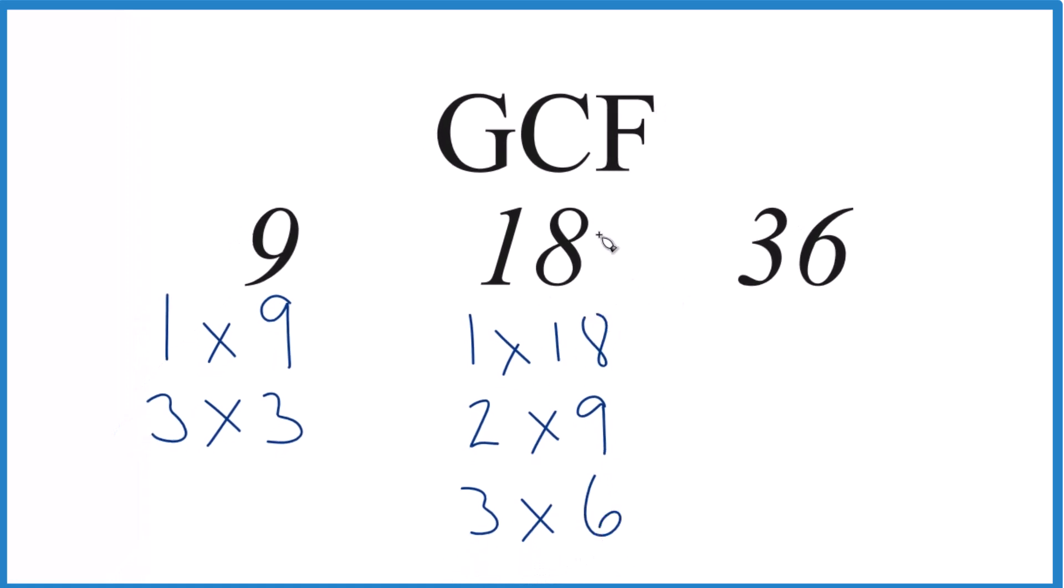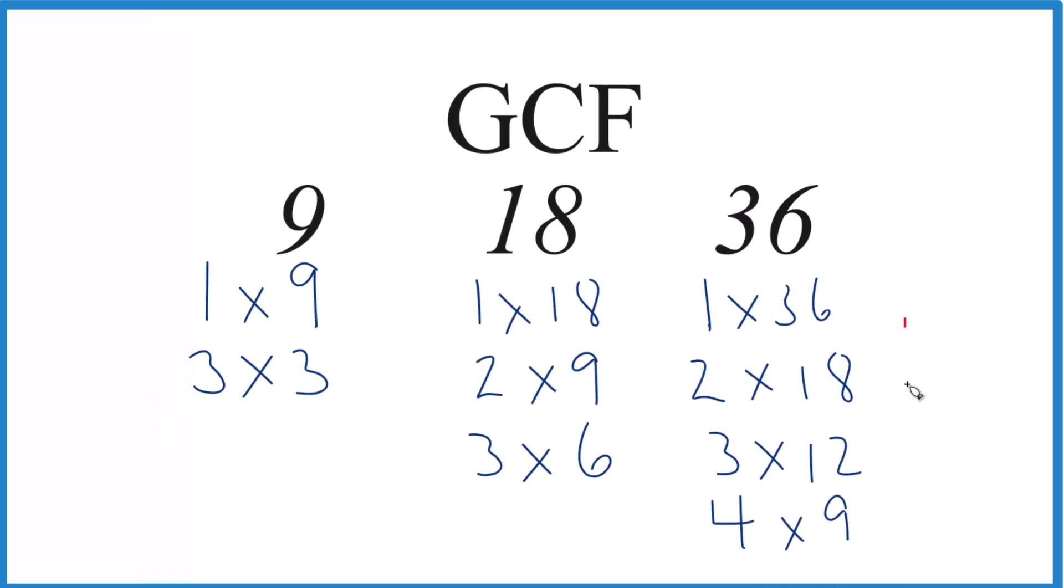Those are the factors for 18. 36, 1 times 36, 2 times 18, 3 times 12, 4 times 9, and then 6 times 6 equals 36 as well.